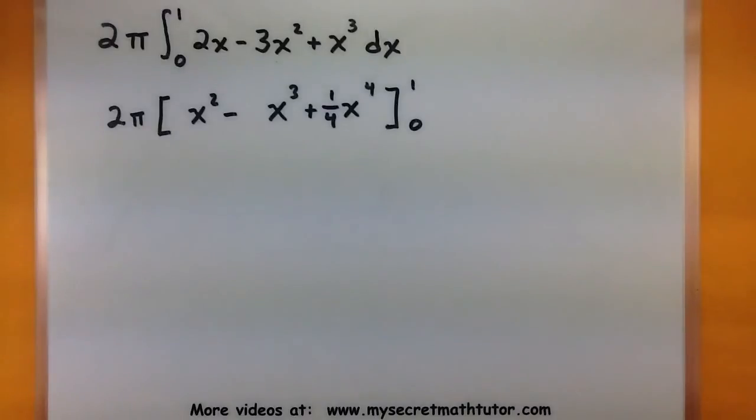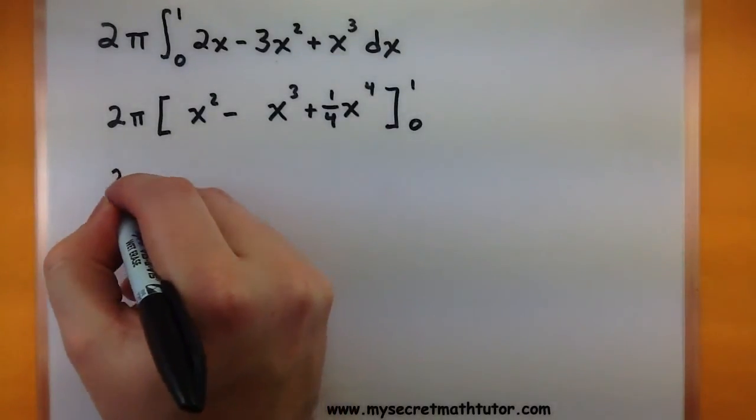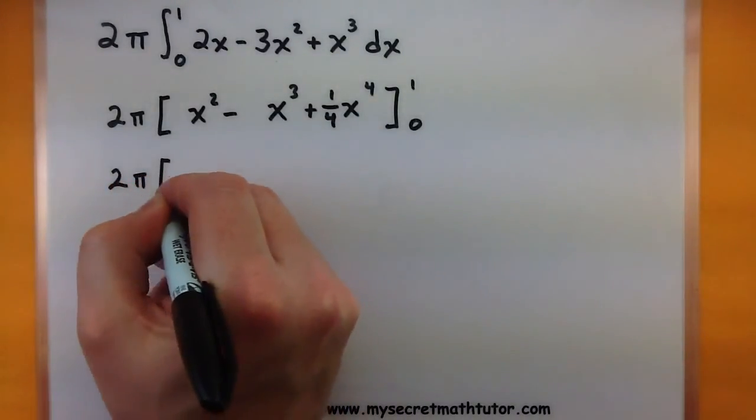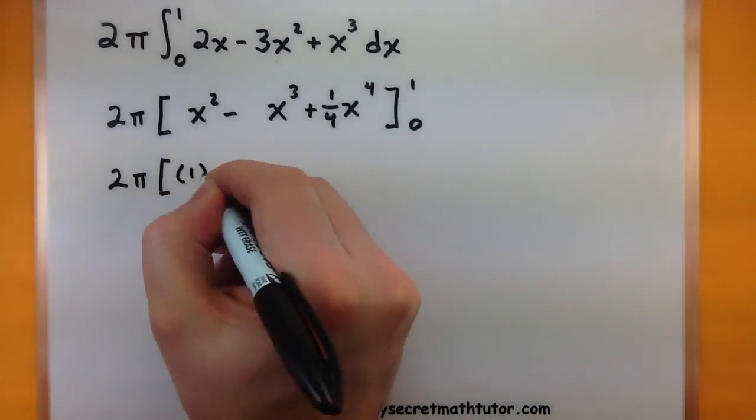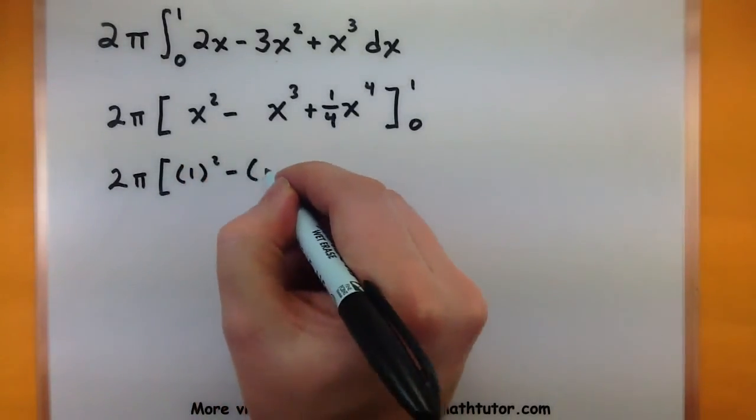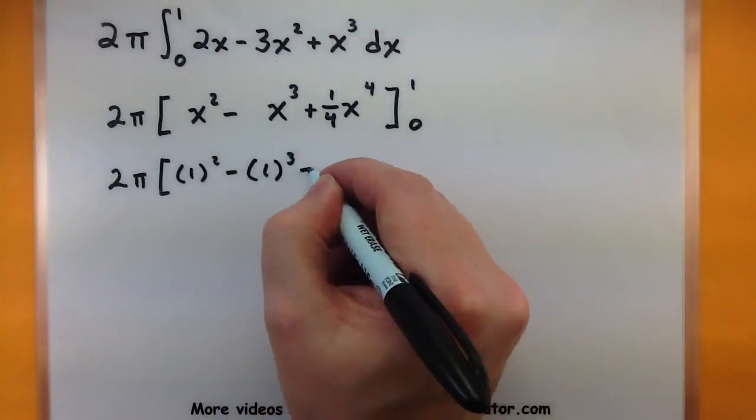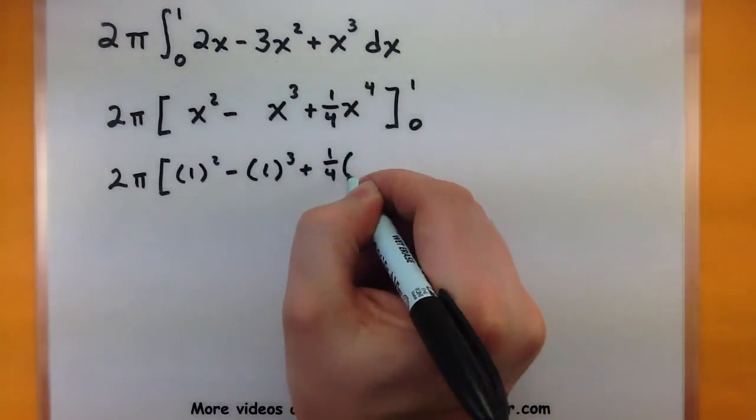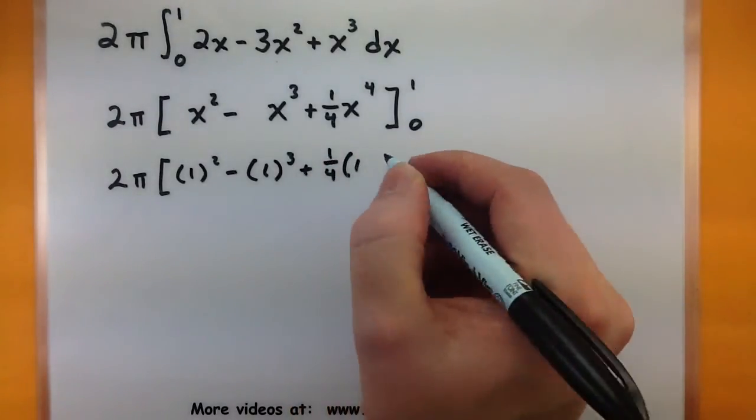Alright. Looks good. Now we can plug in our top bound and our bottom bound. See what this turns out to be. Starting off with the top. Let's see. 1 squared minus 1 cubed plus 1 quarter, 1 to the 4th.